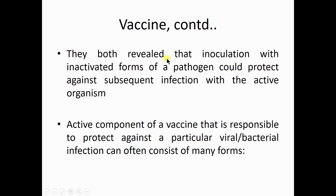Edward Jenner and Louis Pasteur found that inoculation with inactive forms of a pathogen — that is, isolating certain inactive forms from a particular pathogen and introducing them into a human or animal body — would protect against subsequent infections with the same types of active organisms in the future.